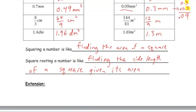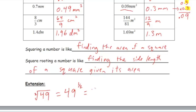Before moving on, here's a little extension about the index of a root. For the square root of 49, we're asking: what number multiplied by itself twice gives 49? Another way to write that is 49 to the exponent 1/2. With square roots we don't write the little 2 in the radical sign, but that index is implied. The answer is 7. This sign here is called a radical sign.